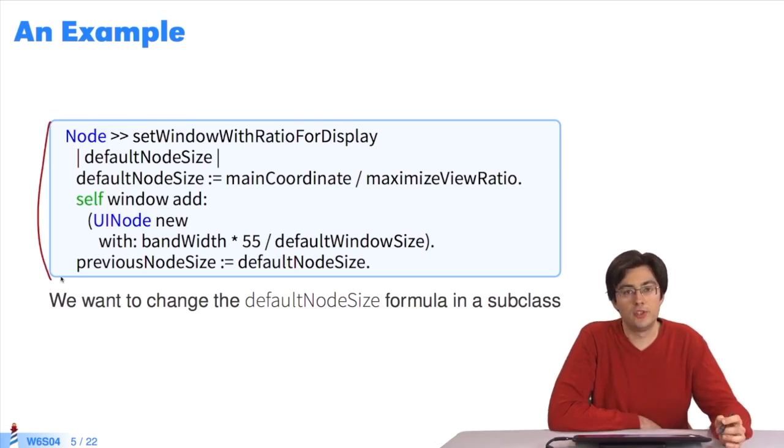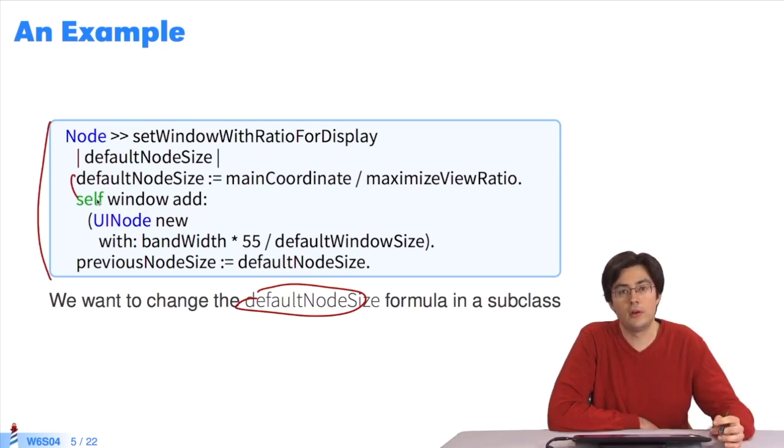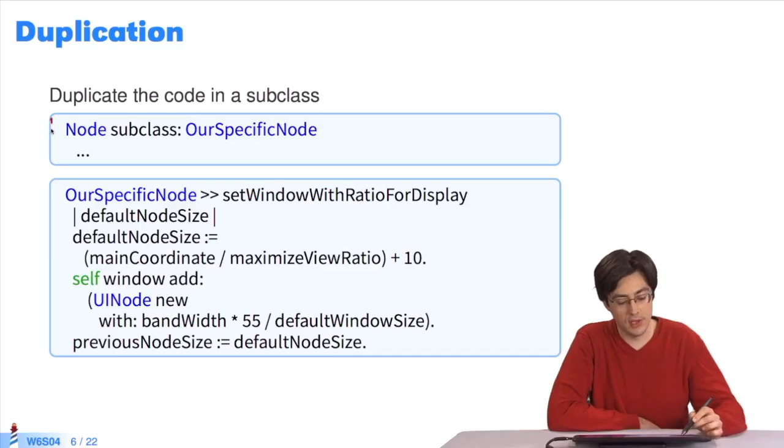Here is a big method that is not easy to understand, and which does many things. Here's what we want to do. In a subclass, we want to give this variable here a different value. As it's set up, the only way to do that is to create the subclass, then duplicate all of the code, adding the small modification you want to make.